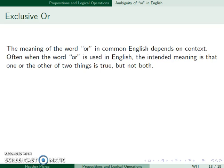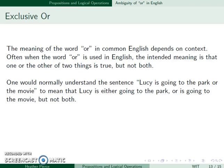There is some ambiguity in the word or. In common English, this depends on the context. When the word or is used in English, the intended meaning is that one or the other thing is true, but not both. For example, if we have the sentence, Lucy is going to the park or the movie, this would normally be understood as that she is either going to the park or going to the movie, but not both.